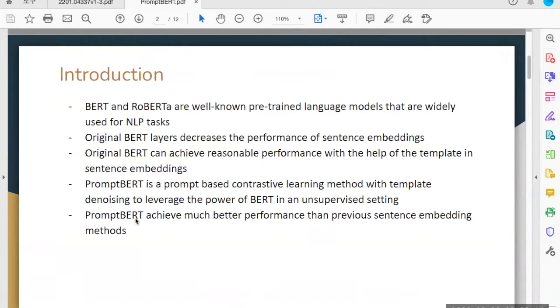PromptBERT, which is the model introduced in this week's paper, is a prompt-based contrastive learning method with template denoising to leverage the power of BERT in an unsupervised setting. This model achieves much better performance than previous BERT models.